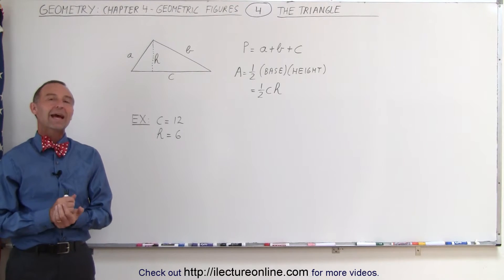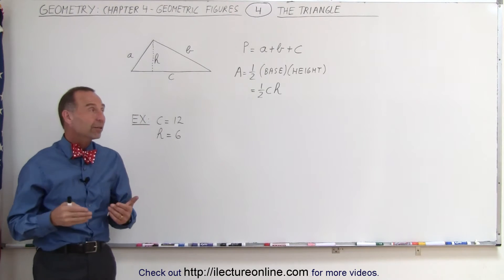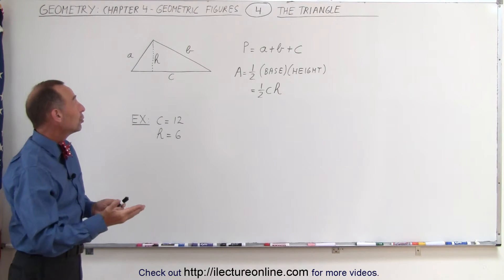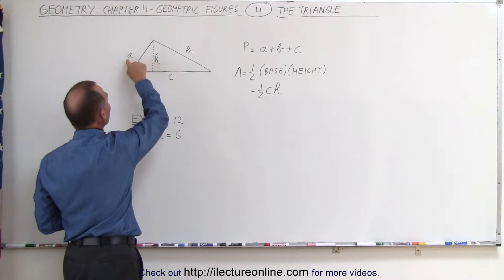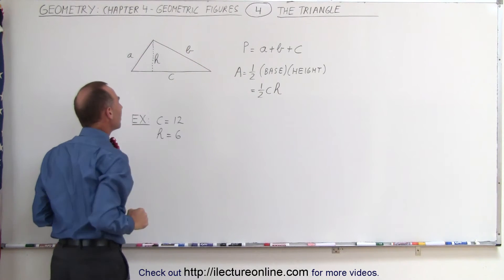Welcome to ElectronLine. Here we have the triangle. To find the perimeter of a triangle, all we have to do is simply sum up the length of each of the three sides. We label them A, B, and C.